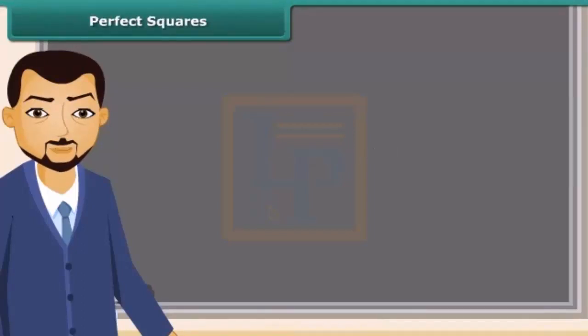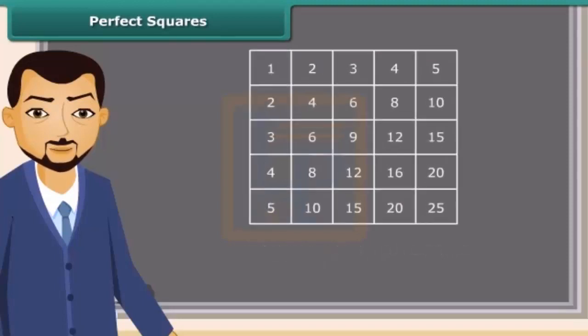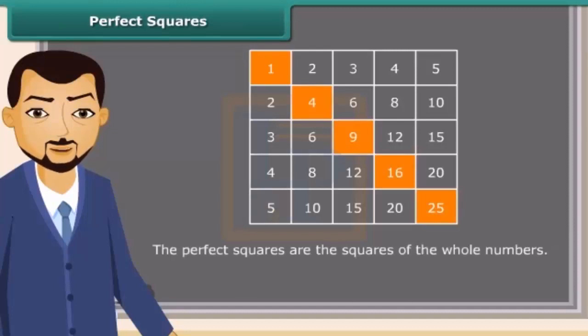Let us read: 1 square is 1, 2 square is 4, 3 square is 9, 4 square is 16, 5 square is 25, and so on. We can also find squares on the multiplication table. Do you know what we call these numbers? They are called perfect squares. The perfect squares are the squares of the whole numbers.